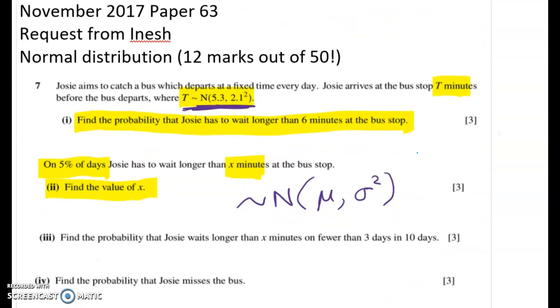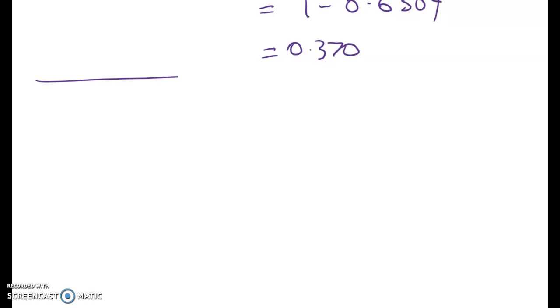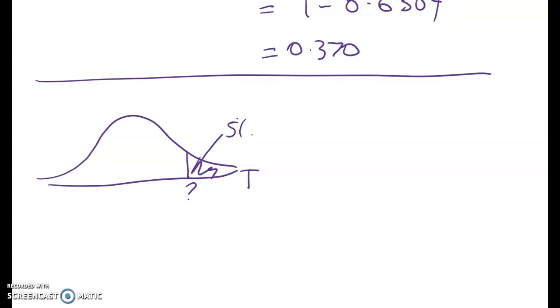Okay so for the next one what we have to do is figure out what the number is so that on 5% of days she has to wait longer than that time. So as usual start by drawing a graph. Here's my graph. This is t. We want to know what's this number here that cuts off 5% here which means that I've got 95% here.